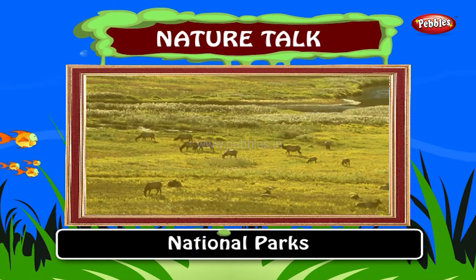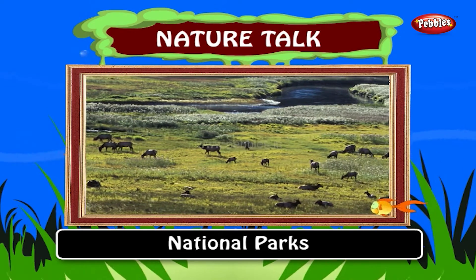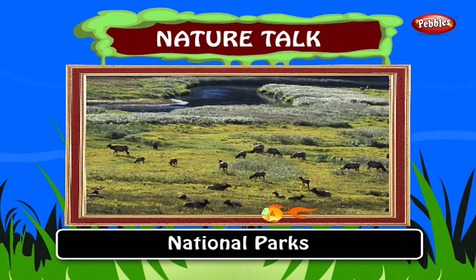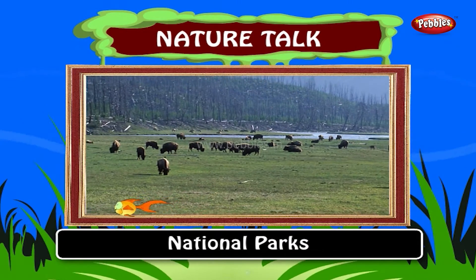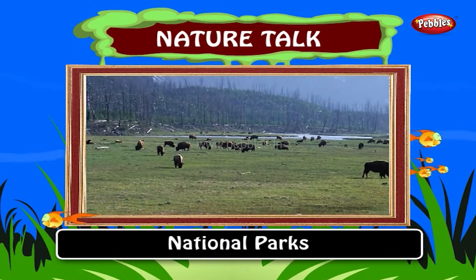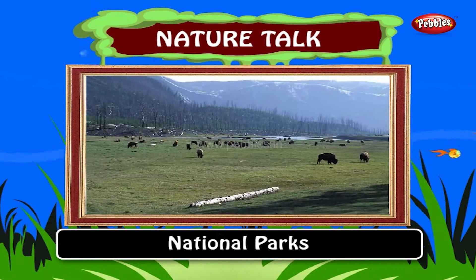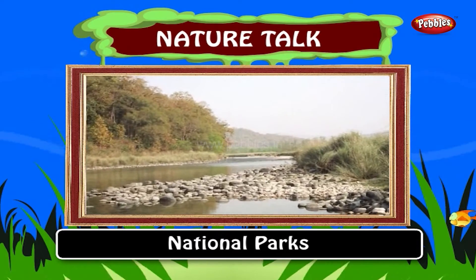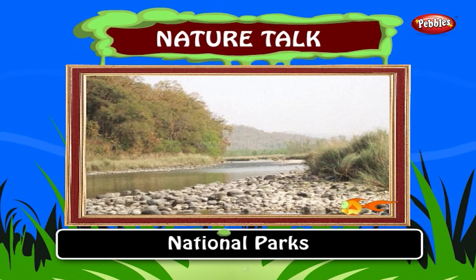Throughout the world, national parks and wildlife sanctuaries have been set up to preserve forest and wildlife. Yellowstone National Park, Montana, USA, was the world's first national park. Corbett National Park, Uttaranchal, was formed in 1936 and is India's first wildlife park.